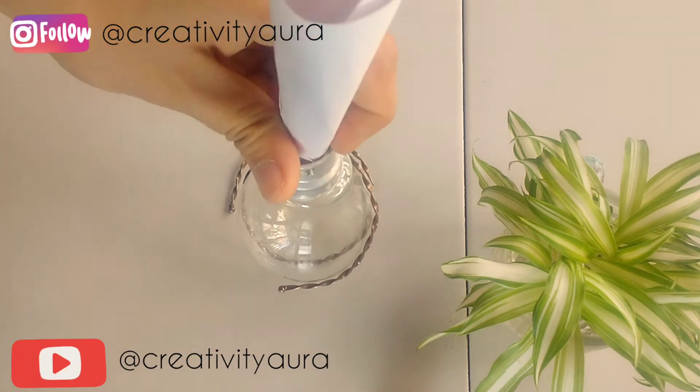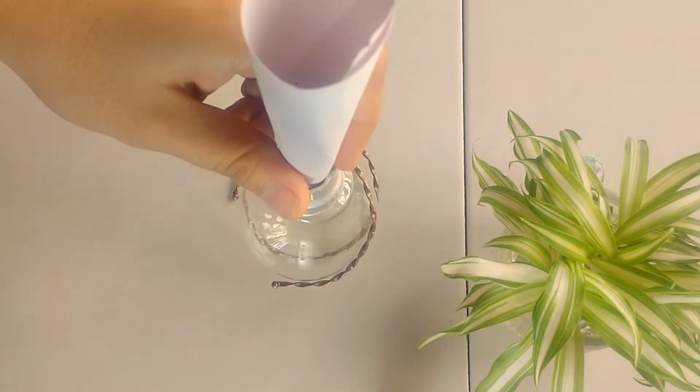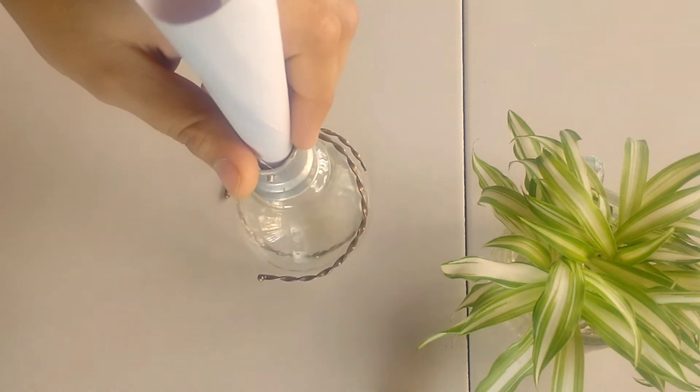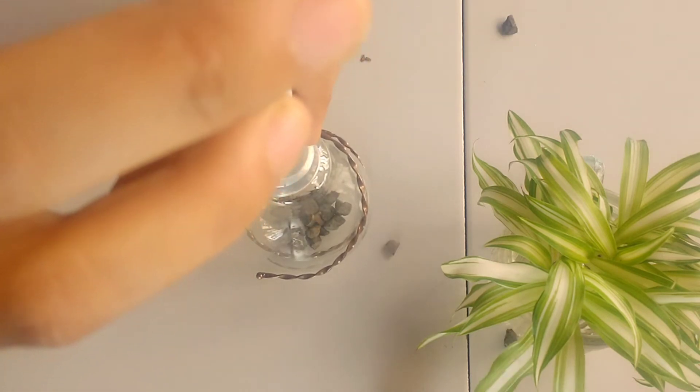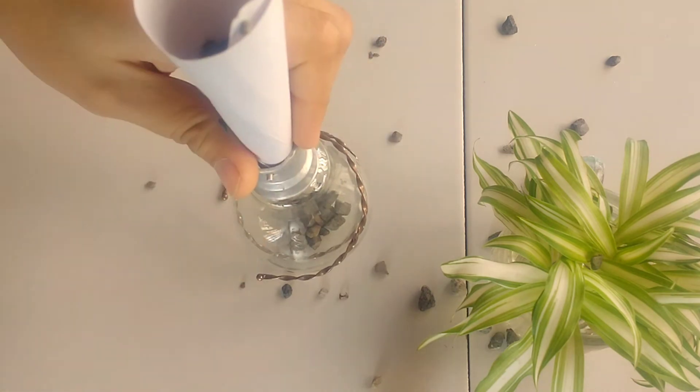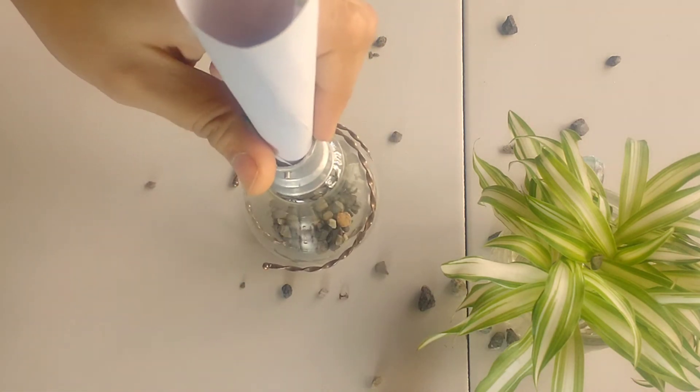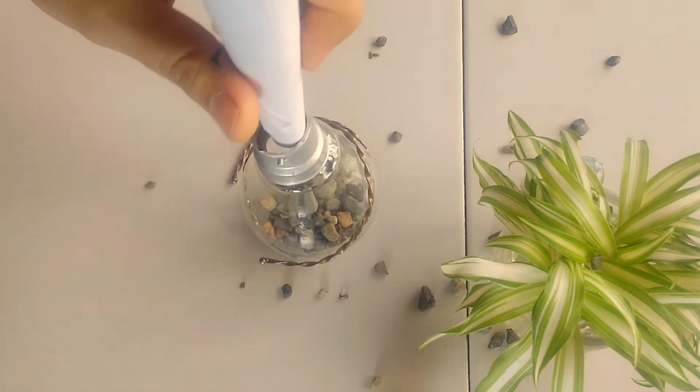We will be pouring in all the contents. Firstly, we will be pouring in the pebbles, which will act as the base of the terrarium. They act as a water draining system for the plants and prevent their roots from rotting from excess water. Carefully lay out an even layer of the pebbles.